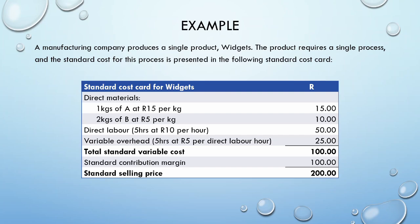We see that we have direct materials A and B, we have direct labor, we have variable overheads, and for each of these, we are given a quantity standard and a price standard. We then have the total standard variable cost, the standard contribution margin, and the standard selling price.